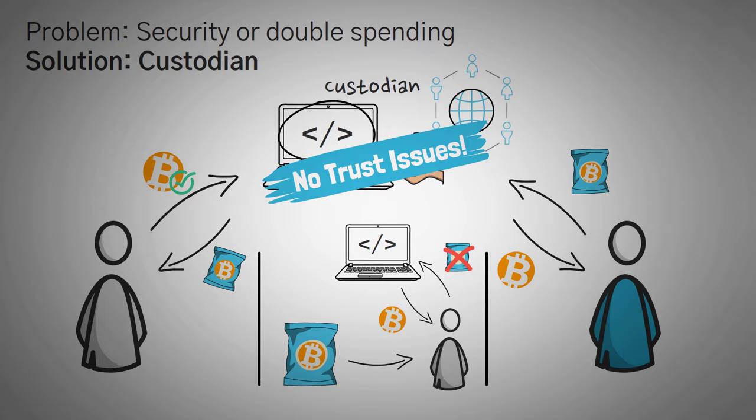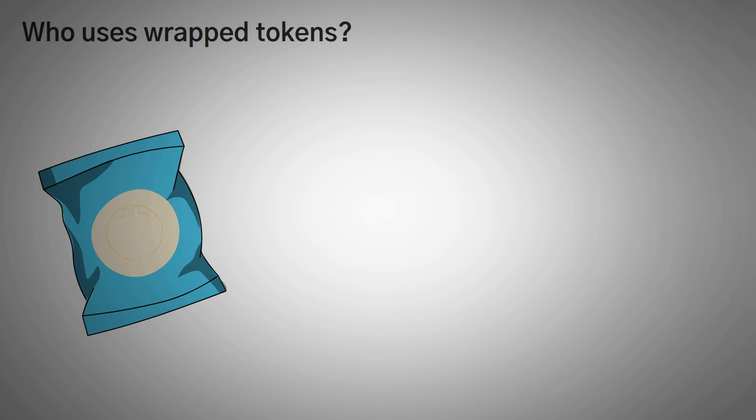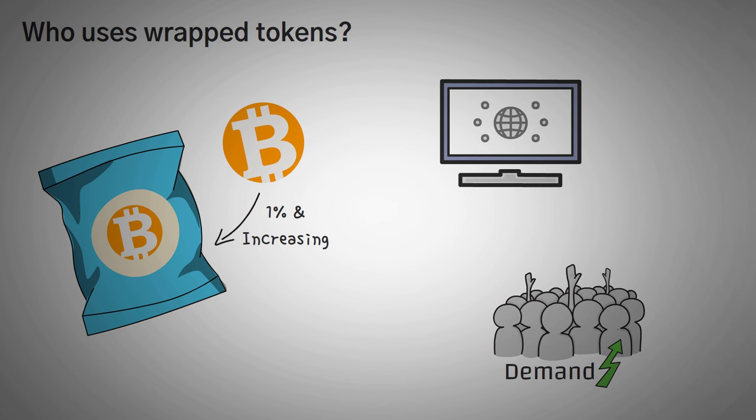Lastly, who even uses wrapped tokens? Well, the example that we've been working with so far is a simple one, wrapped Bitcoin, so we can understand the underlying concept. Now, this is a great use case, and the share of Bitcoin being used for wrapped Bitcoin is over 1% and increasing every day. This is of course not a massive amount, but it is steadily increasing as the demand for the Ethereum network and dApps increase over time.